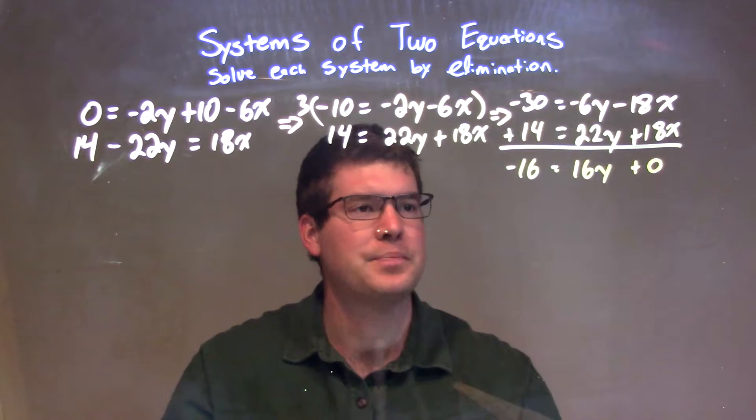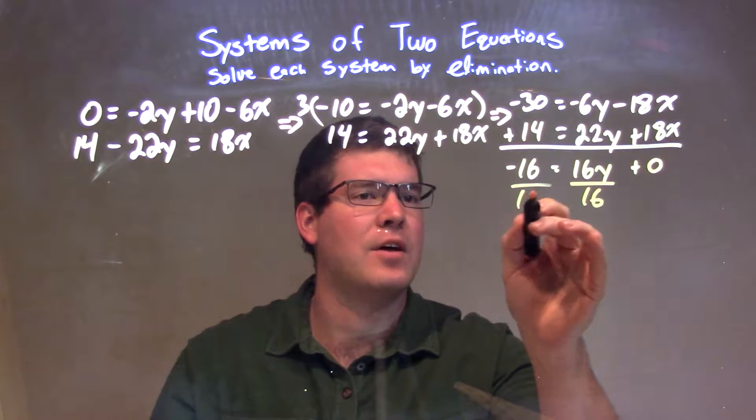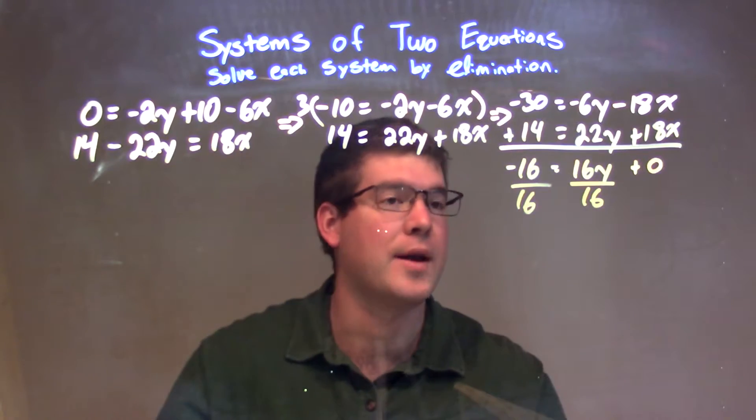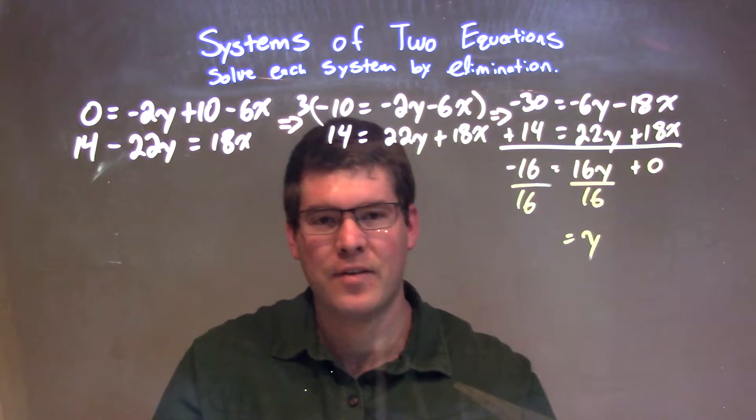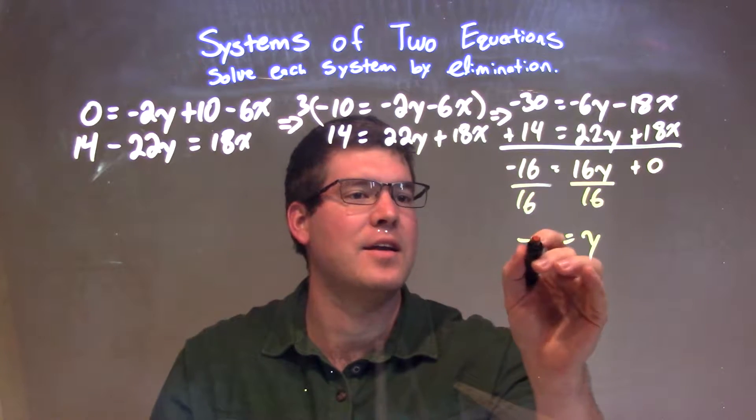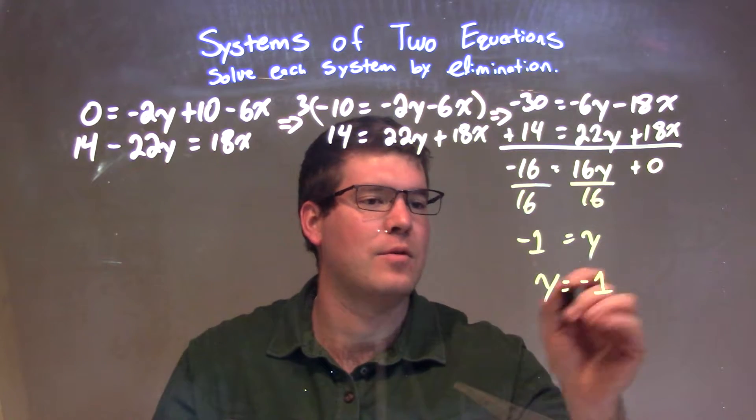Now what we're going to do is divide both sides by 16 to get y by itself. We don't really care about that plus 0 anymore. On the right, we have y by itself, and negative 16 divided by positive 16 is negative 1. For good measure, we can write y first: y equals negative 1.